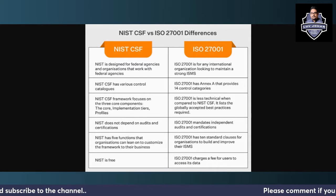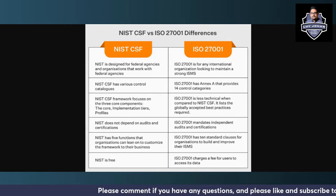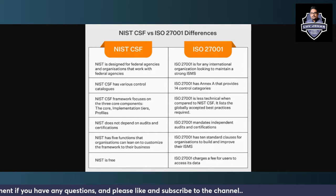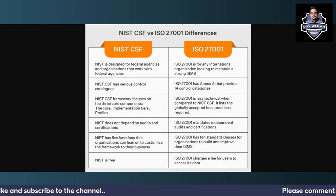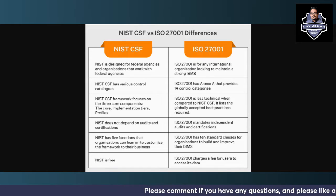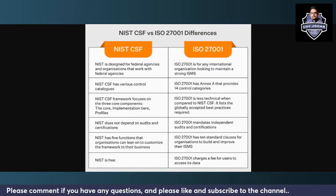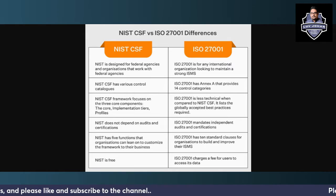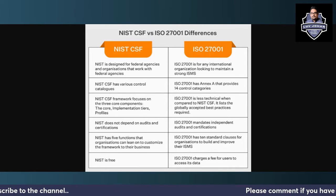The NIST Cybersecurity Framework has various control catalogs, which have been discussed in previous videos on this channel. ISO 27001 has different control categories in Annex A, where you have control categories that you can apply. The NIST Cybersecurity Framework focuses on three core components: the core, implementation tiers, and profiles. ISO 27001 is less technical when compared to the NIST Cybersecurity Framework — it lists globally accepted best practices required to maintain your information security management system.